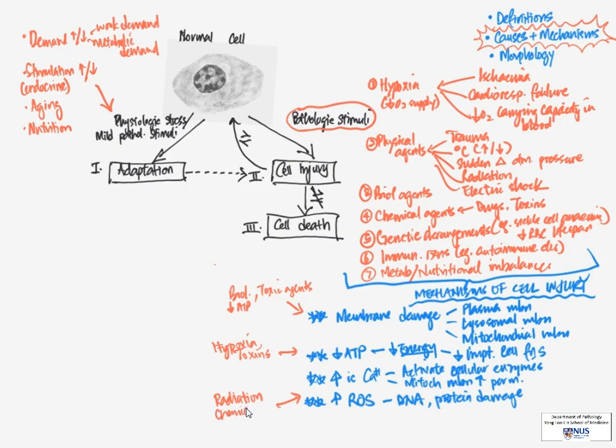reactive oxygen species have been linked to radiation injury, as well as chemical injury, and specific forms of injury such as ischemia reperfusion injury, which you can read about in Robbins, and even in aging.